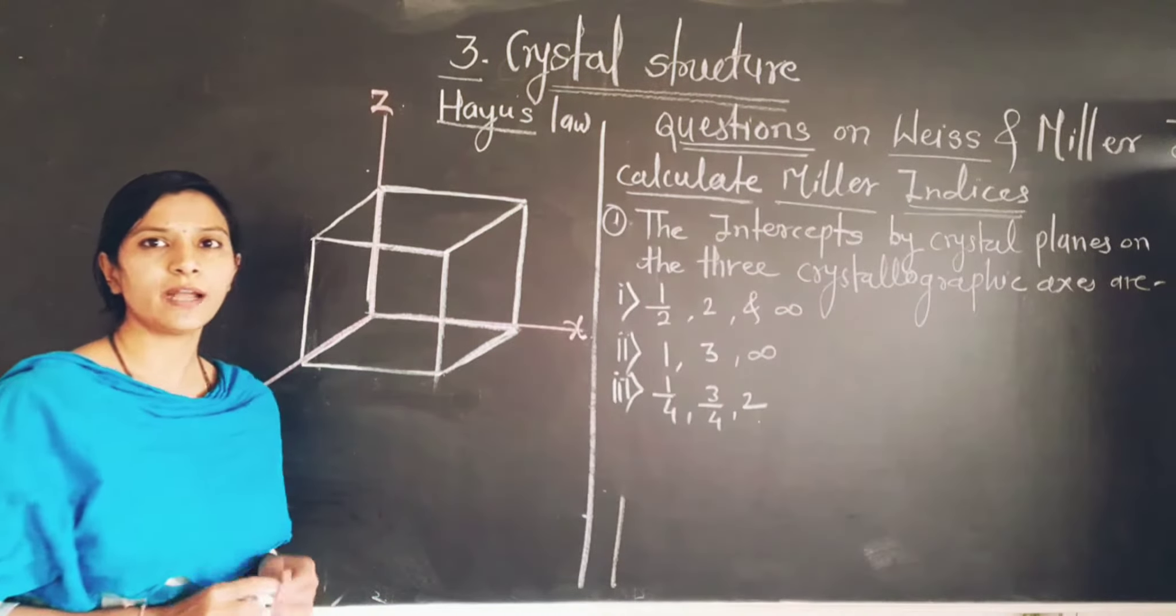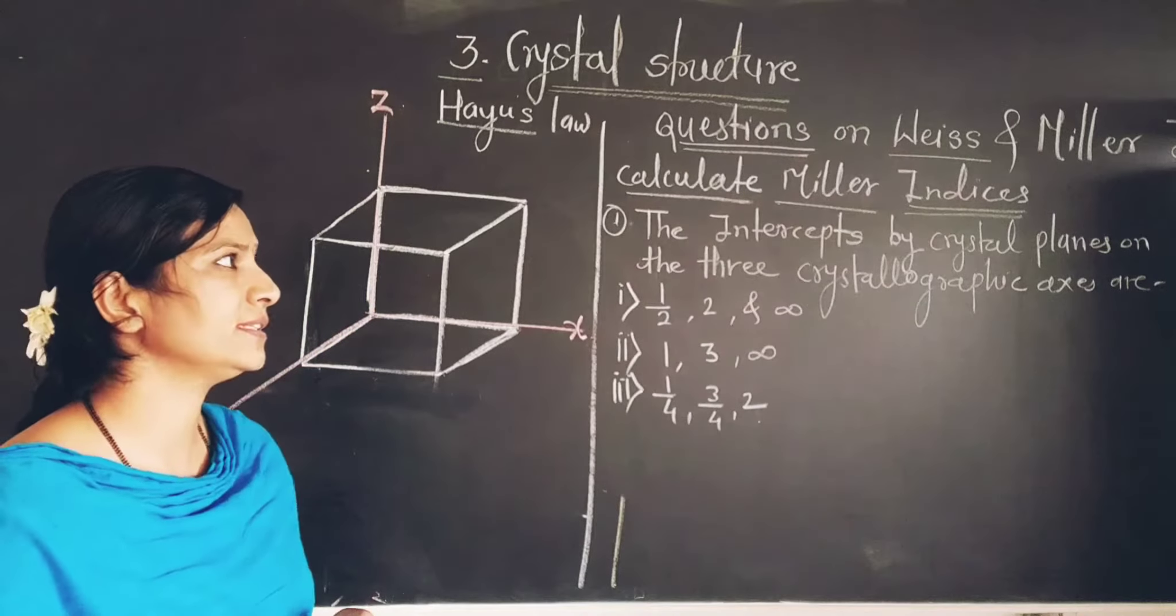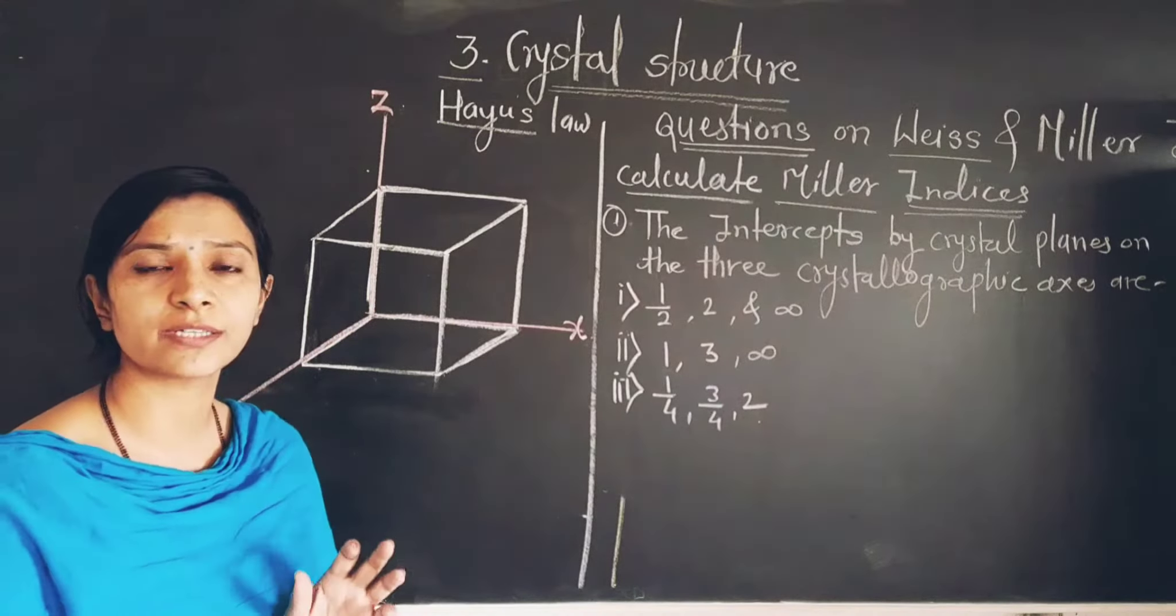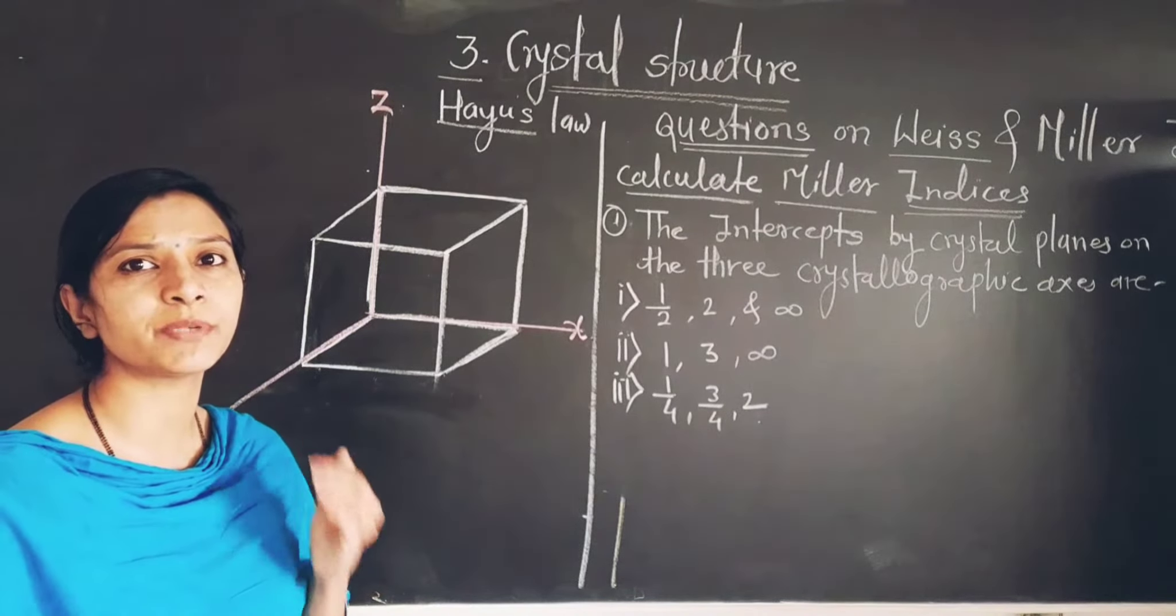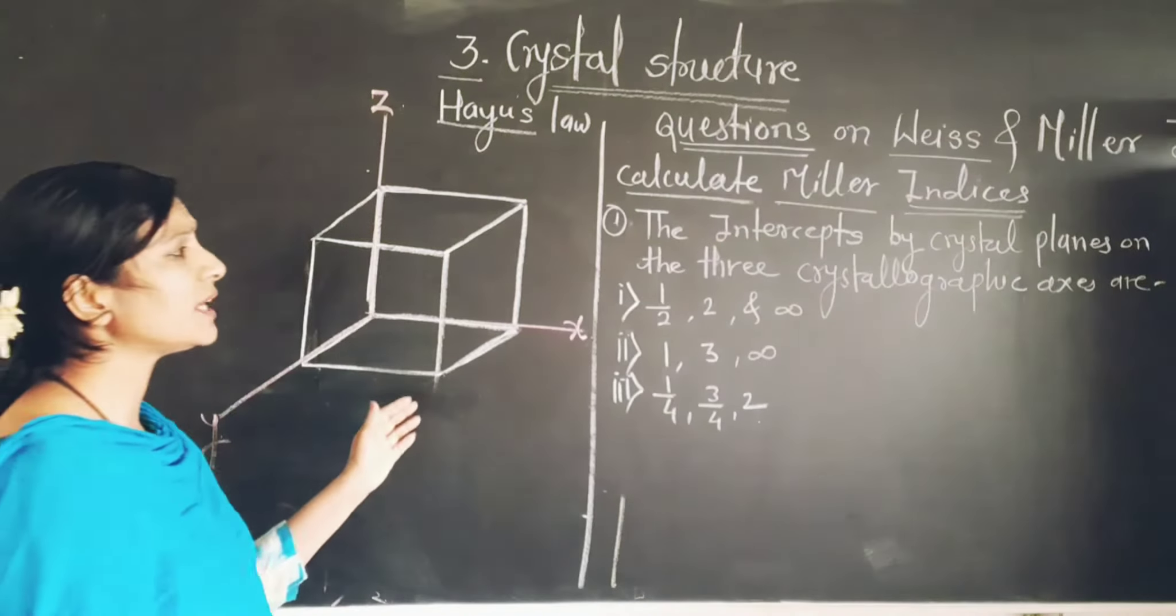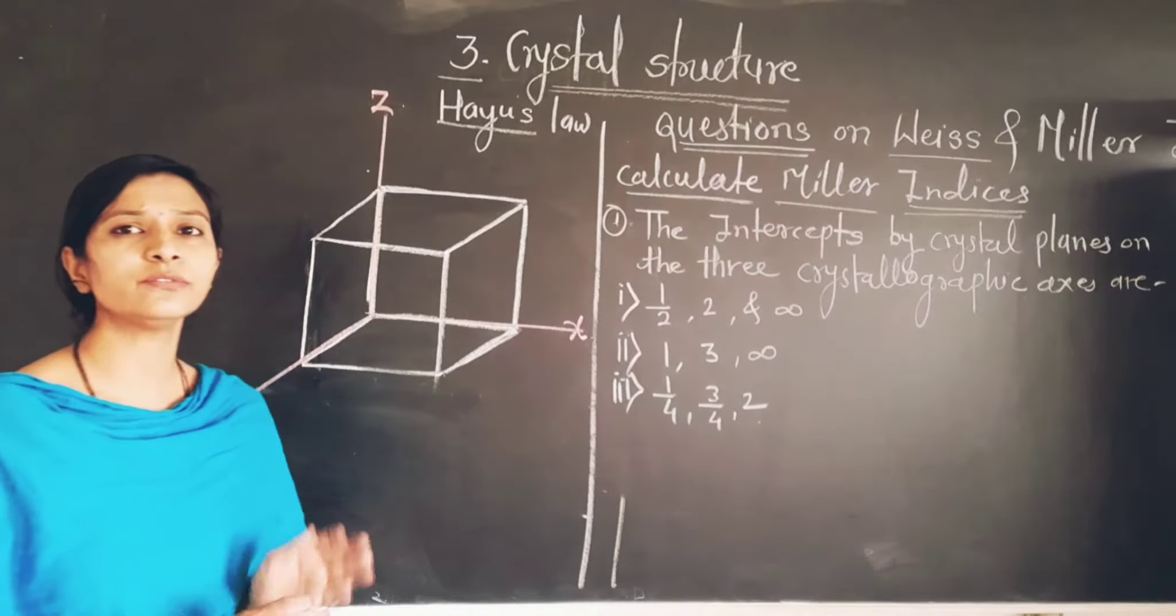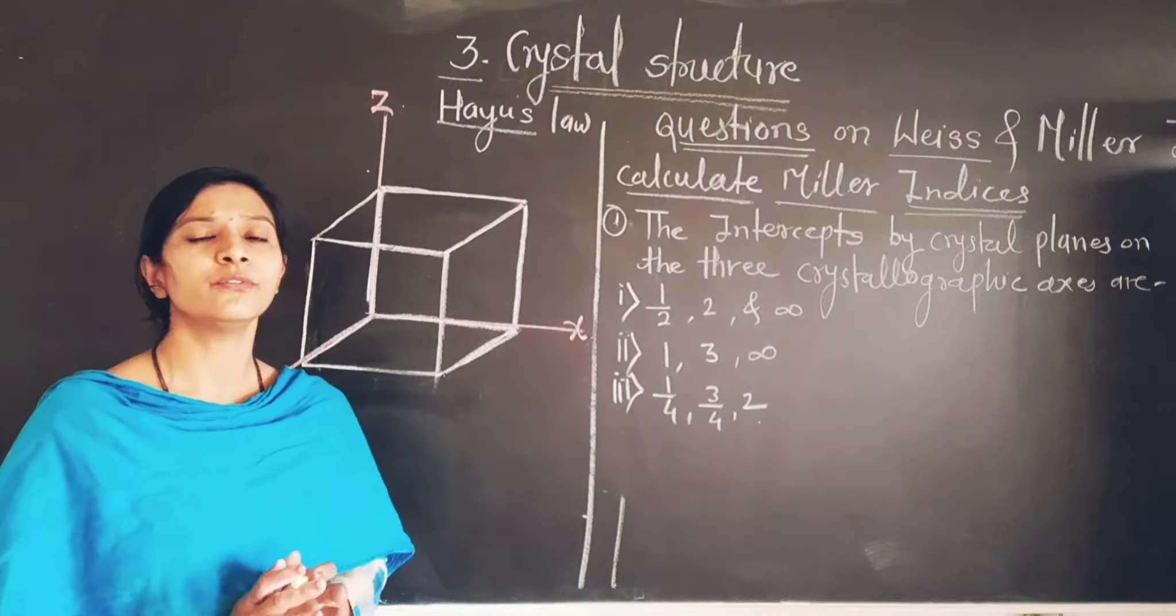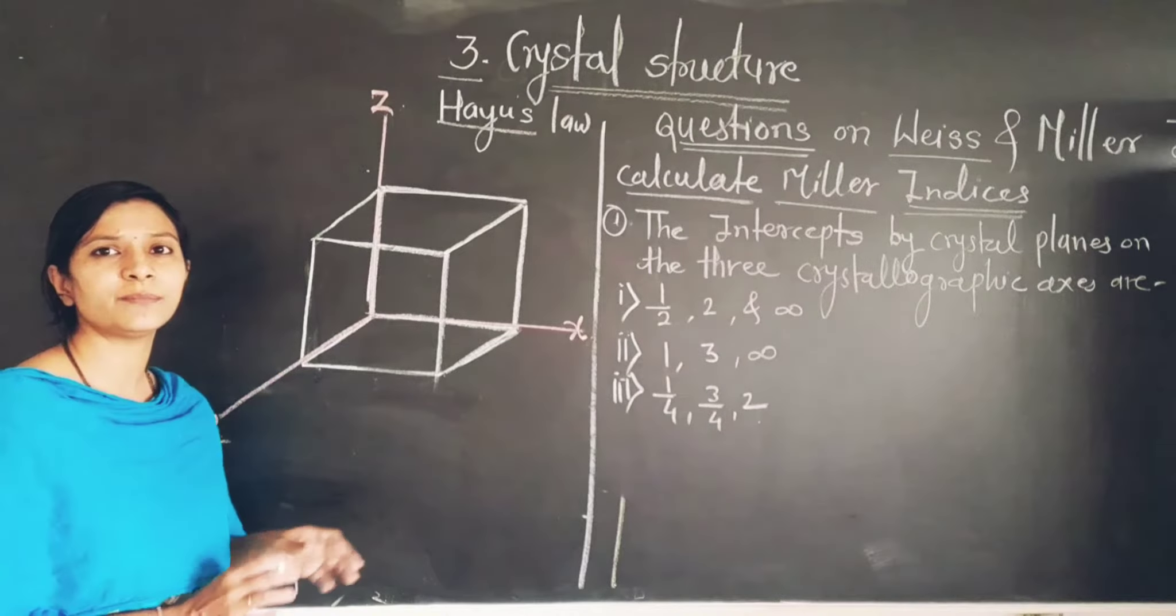So friends, Haüy law is nothing but the law of rationality of indices. I've already discussed the introductory part of this law in the previous video. But related to that, I have some examples to put in front of you, and how these examples are solved, we will discuss using the crystal system.